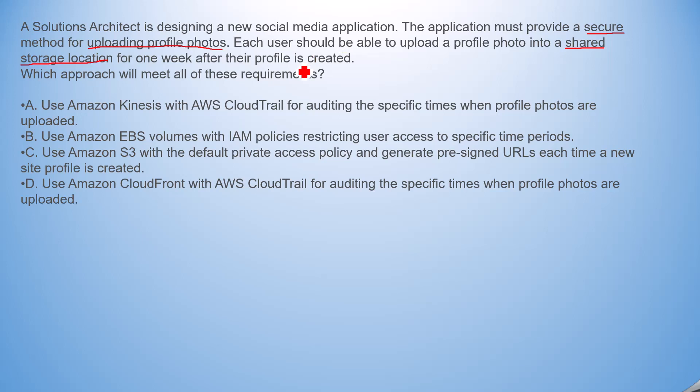Option A: Use Amazon Kinesis. This option is obviously wrong because Kinesis is generally used for high-frequency streaming data. There's no need to go through this option further, so I will mark it as wrong.